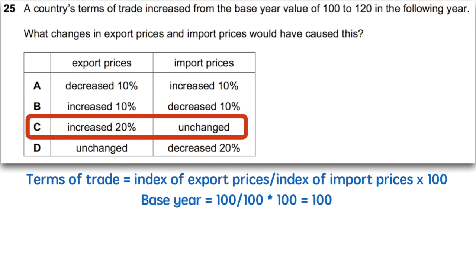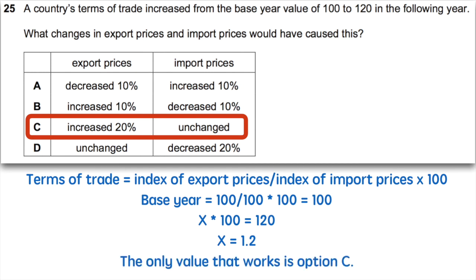The terms of trade is equal to the index of export prices divided by the index of import prices times 100. The base year equals 100 divided by 100 times 100, which gives us an index of 100. If X times 100 equals 120, then X equals 1.2. This means that our export prices have increased by 20%. The only value that works is option C.